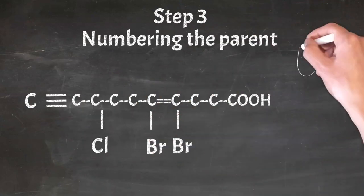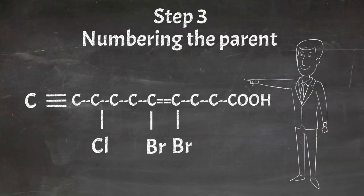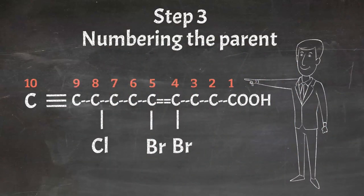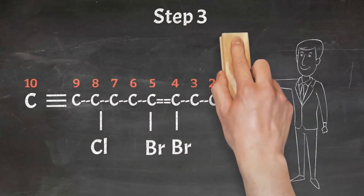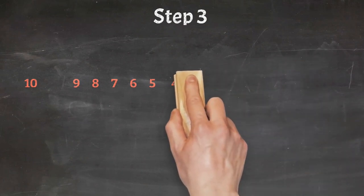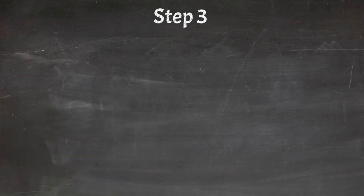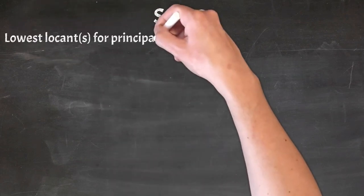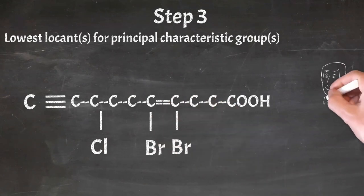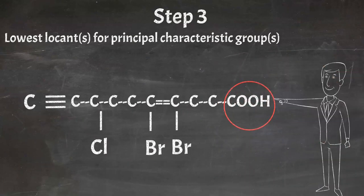Now let me show you which end to use to start numbering from. There is a specific criteria to be followed in sequence. Criteria number 1: you always have to start numbering from the end closest to the functional group. As this is our principal characteristic group, we will start numbering from this side — that is, from right to left.